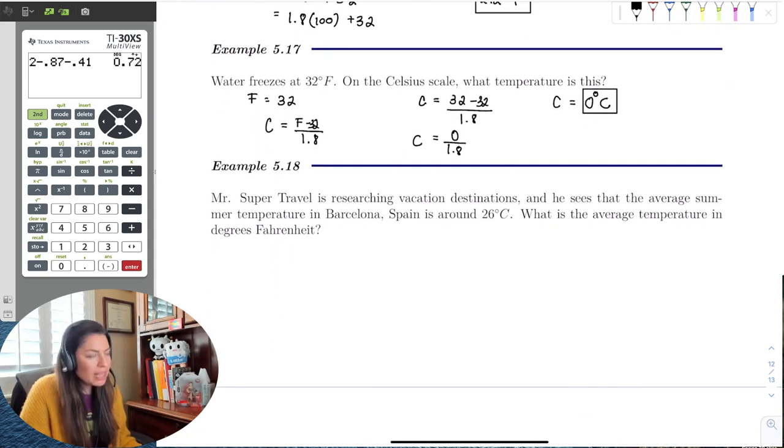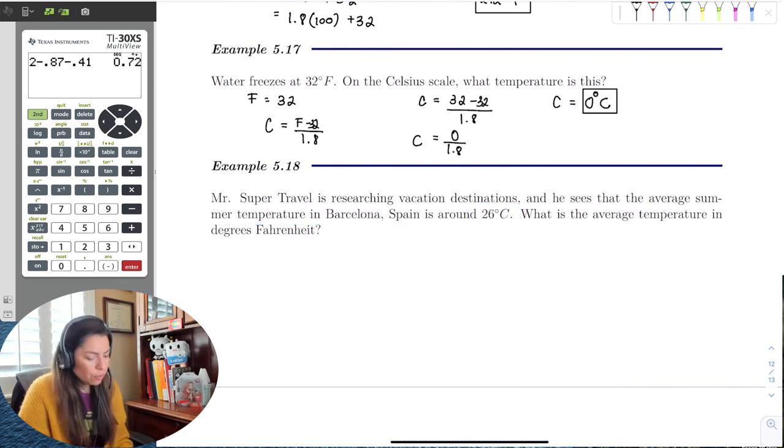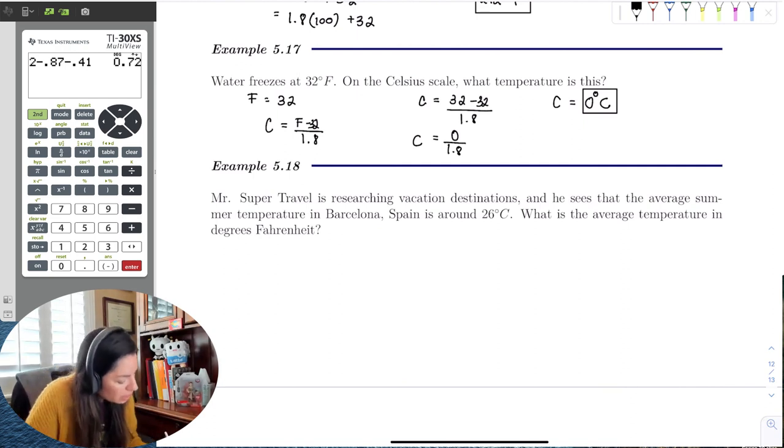And the last thing is traveling, how we miss it so much. One day we'll be able to travel to Barcelona and use all this information to convert our temperatures. Mr. Super Travel is researching vacation destinations and sees that the average summer temperature in Barcelona, Spain is 26 degrees Celsius. What is the average temperature in Fahrenheit? That doesn't seem, that seems cold when you first look at that 26 because we're so used to Fahrenheit. But let's go ahead and look. Celsius is given to us at 26, so this means we're going to be using that Fahrenheit formula of 1.8 times 26 plus 32.